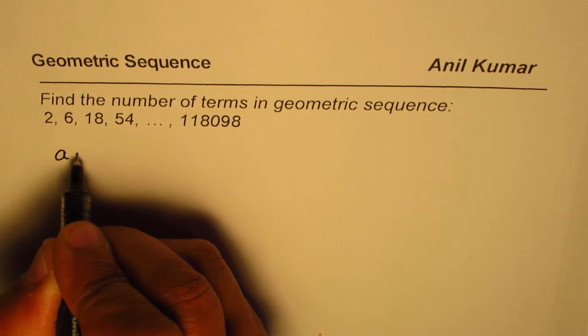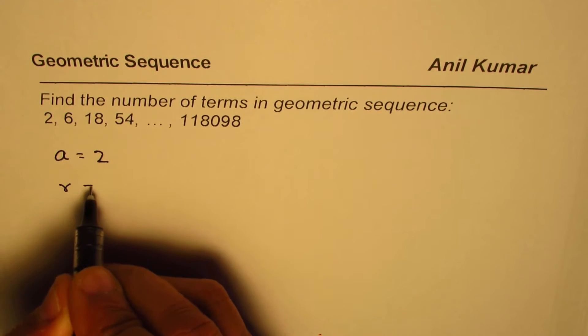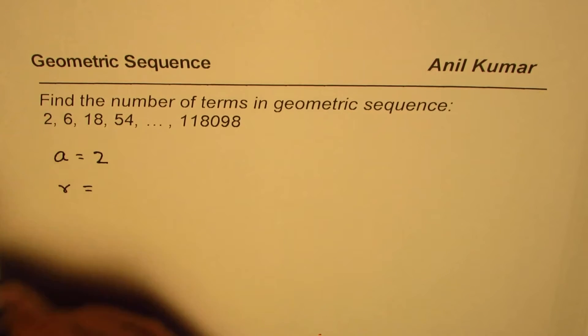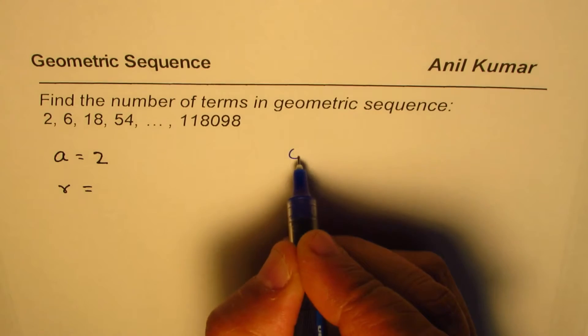In a geometric sequence we have to look for first term, that is the value of a. The first term is 2 for us. And then we have to find the ratio which is between consecutive terms. So in our case the ratio is 6 divided by 2 which is 3.